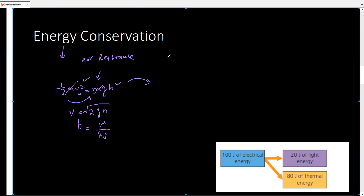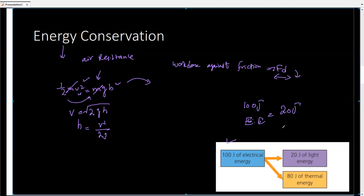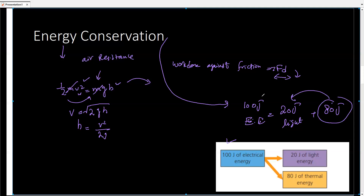If air resistance is present, some work has to be done against friction, given as ft. When resistance is present, some energy converts into thermal energy — for example, turning on a bulb: given 100 joules of electrical energy, only 20 joules converts to light and the rest is wasted as thermal energy. To apply conservation of energy, we add the waste energy to the output to prove energy has been conserved.